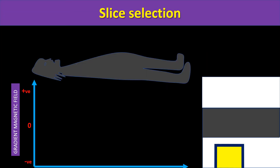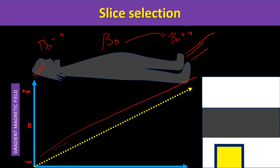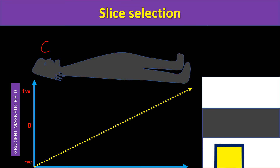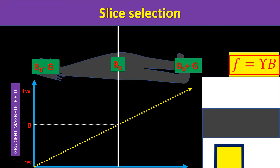To select a slice, we apply a gradient. The MRI machine's magnetic field is B0; we add some magnetic field and subtract some, creating a gradient — maximum magnetic field at one end, minimum at the other. Going from cranial to caudal, there is a varying magnetic field. The frequency produced by hydrogen protons is maximum at the caudal end and minimum at the cranial end.